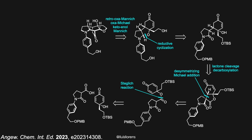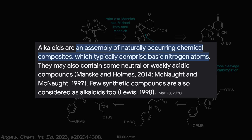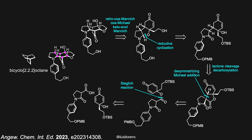Hello everyone. In this video, I'm going to talk about the synthesis of Incargranin A, an alkaloid that features a 2,2,2-bicyclooctane core with six contiguous stereocenters.